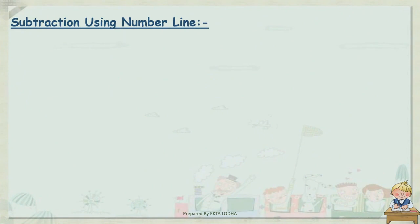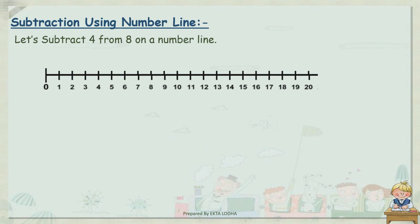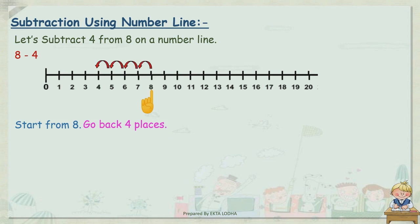Our next heading is subtraction using a number line. Let's subtract 4 from 8 on a number line: 8 minus 4. Start from 8 — point your finger on 8. Now we have to subtract 4, so go back 4 places: 1, 2, 3, and 4. So which is our last number? That is 4. You reached at 4. Thus, 8 minus 4 is equal to 4. Your answer is 4.